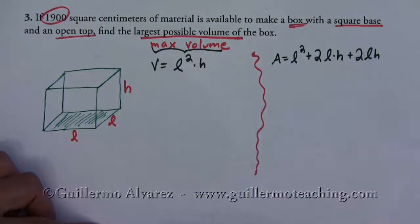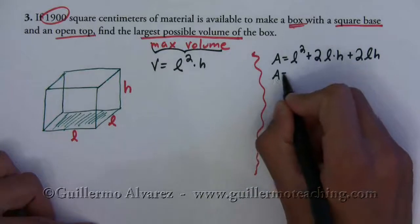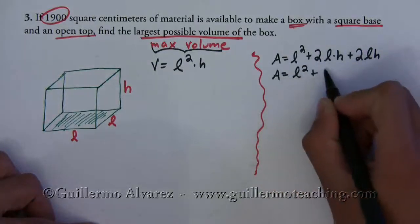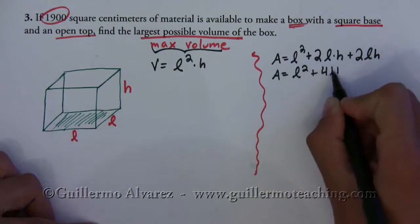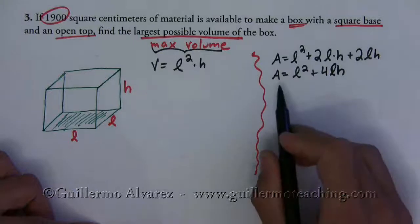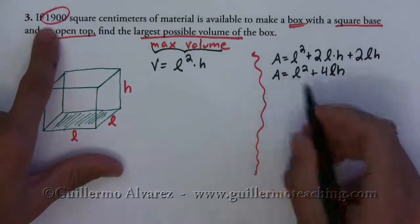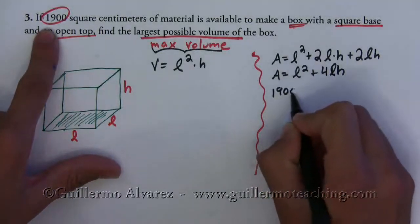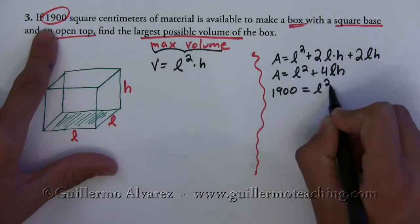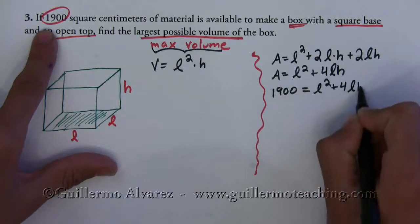And so then we have the area is equal to l squared plus 4 l h. But we know the area is 1900 square centimeters so we have 1900 equals l squared plus 4 l h.